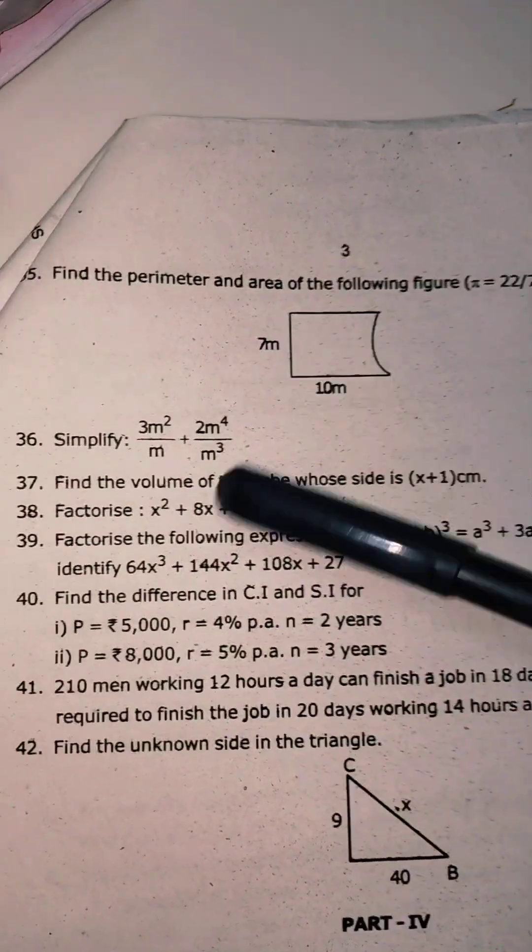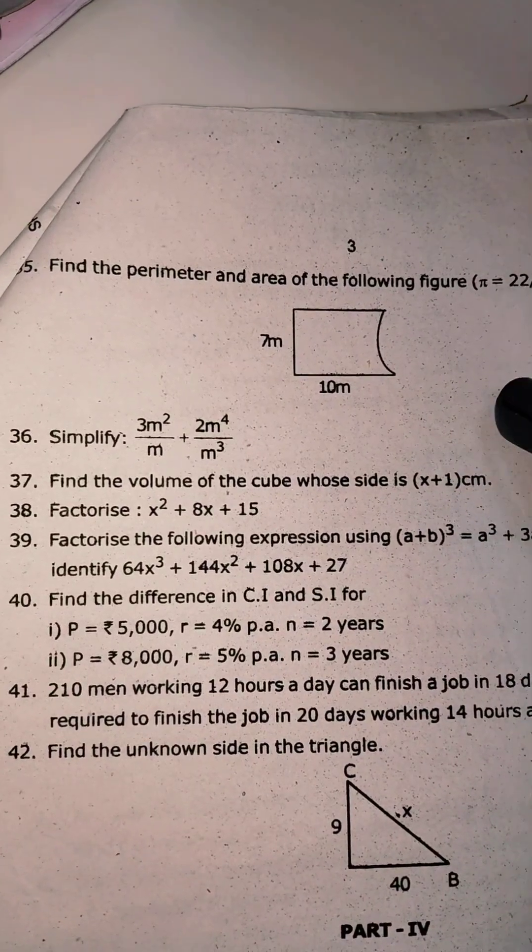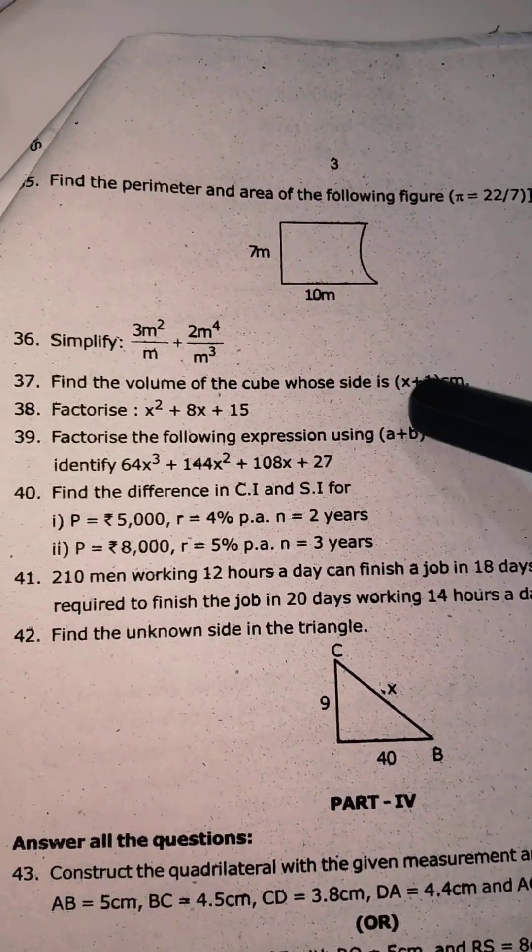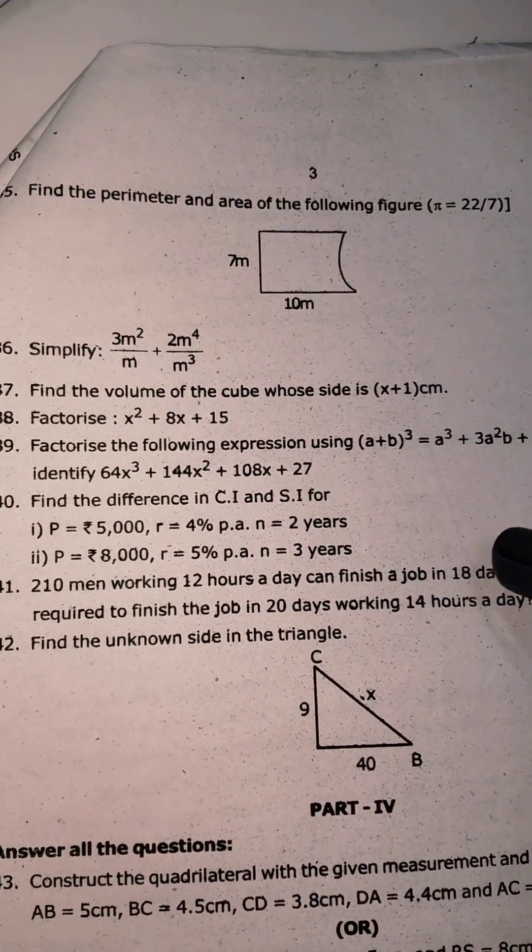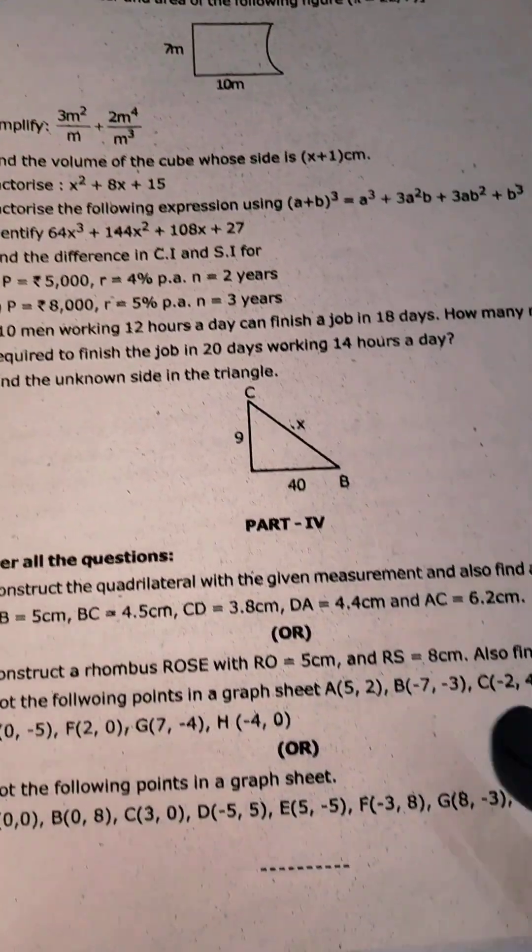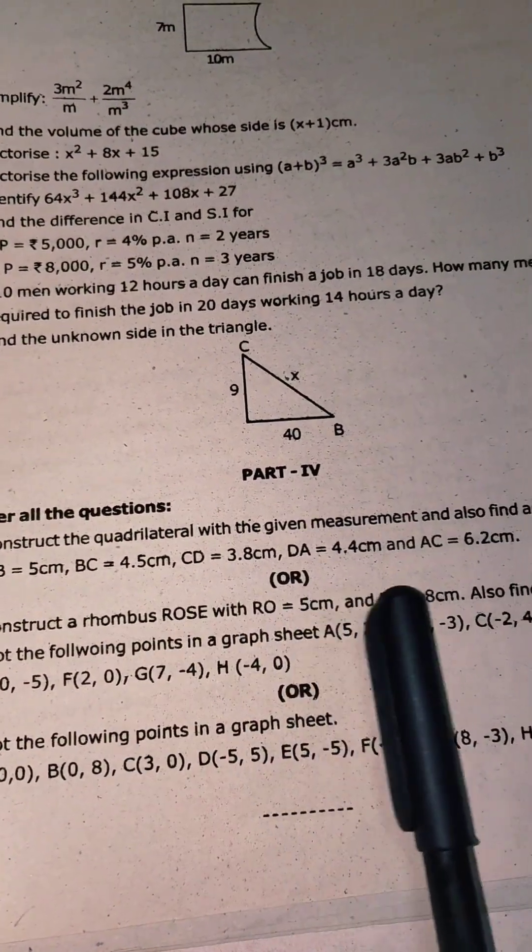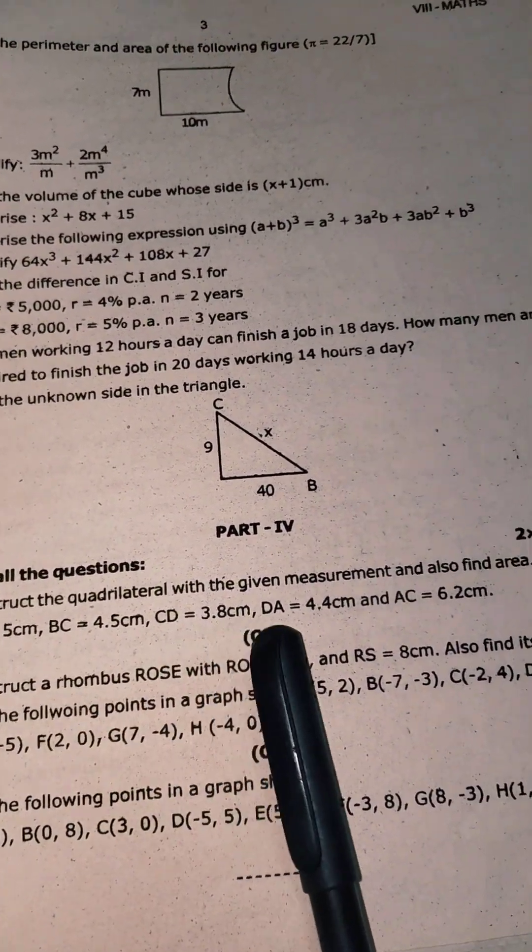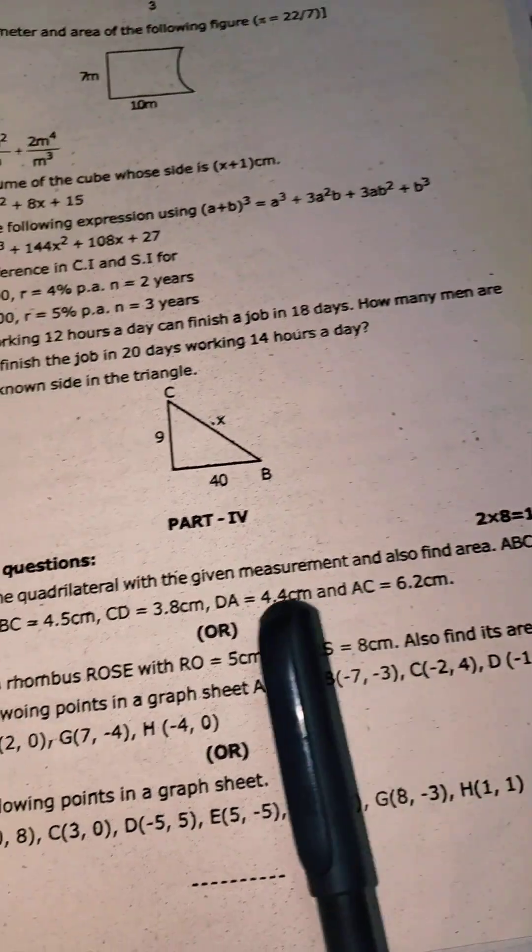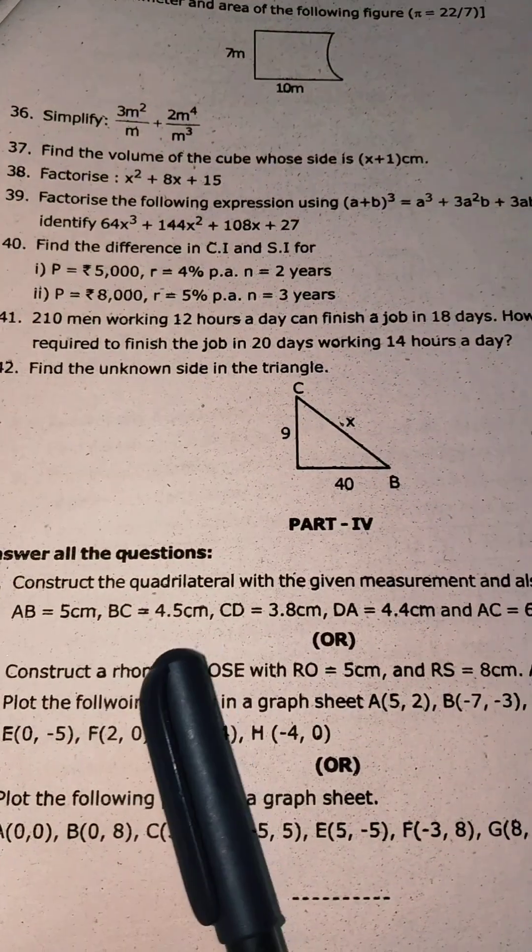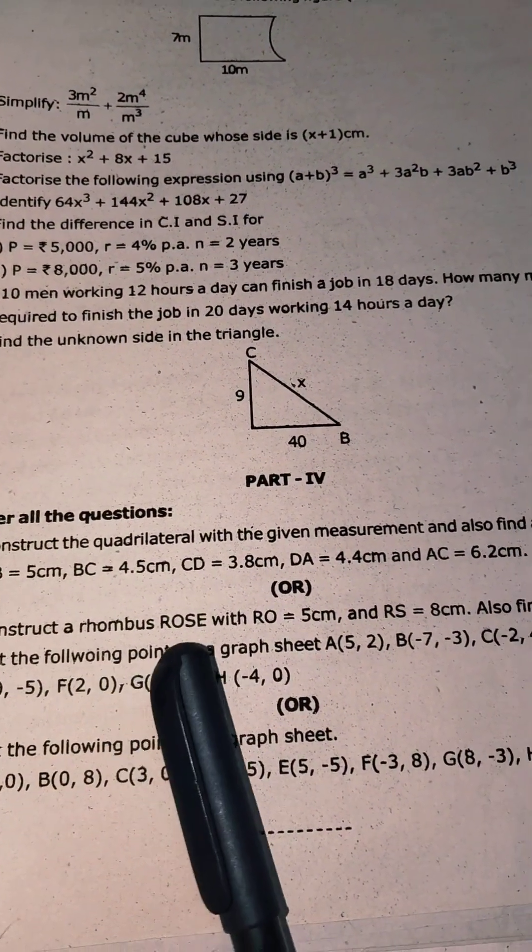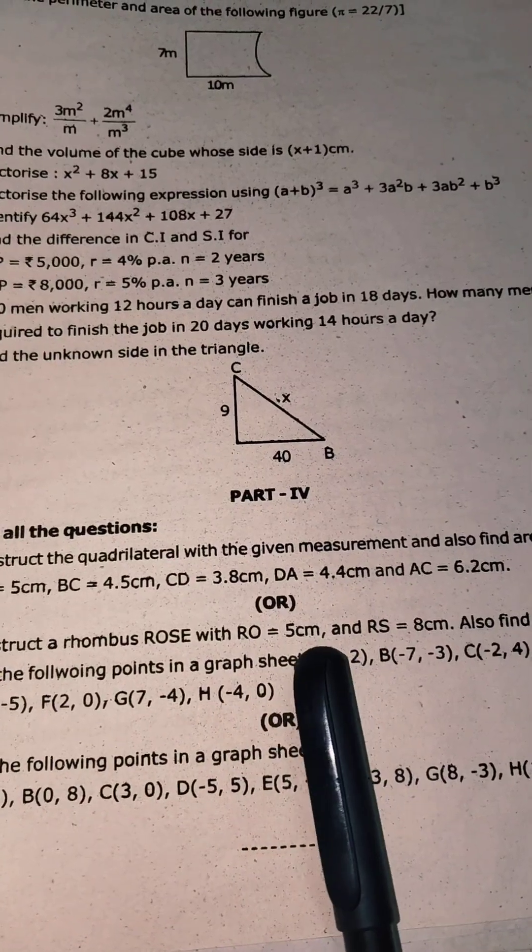Let's look at the 100 mark. That's why we have to look at the 5 marks. To answer all questions. Construct the quadrilateral with a given measurement and also find the area A, B, C, D. Construct the rhombus, RD equals 5cm.